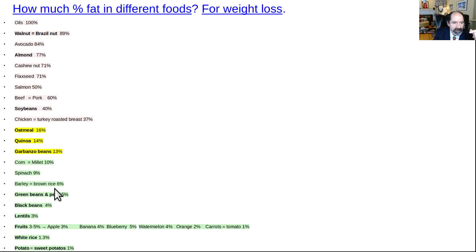Corn and millet are both about 10% fat. Spinach, 9% fat. Barley and brown rice, about 6% fat. Okay, so here's another surprise. Green beans and peas, about the same, pretty good, 5% fat.